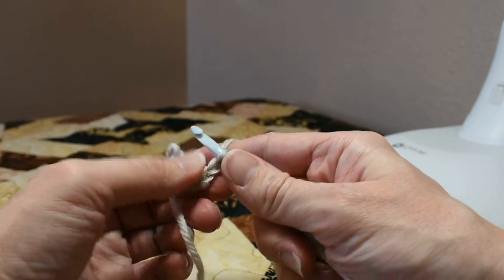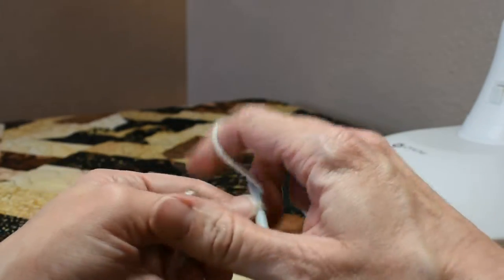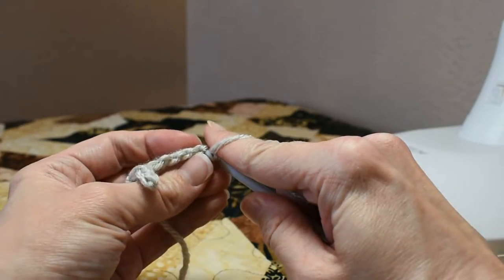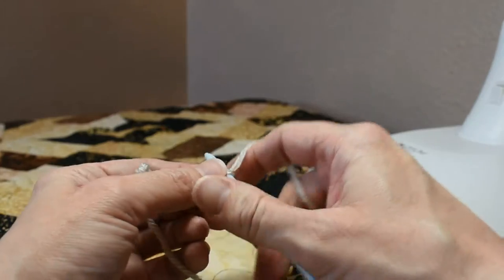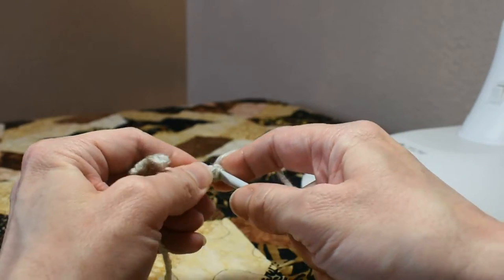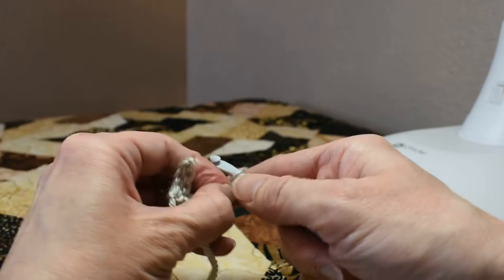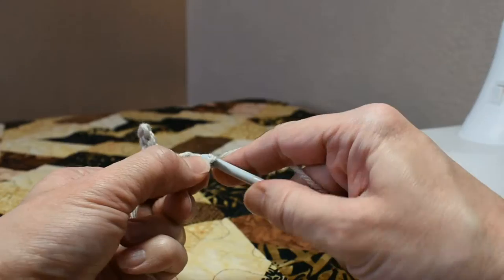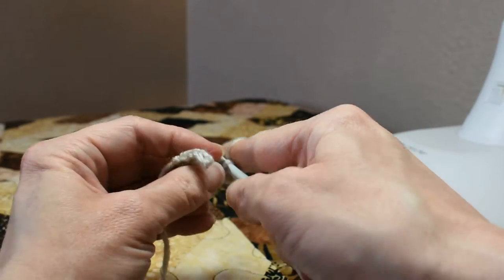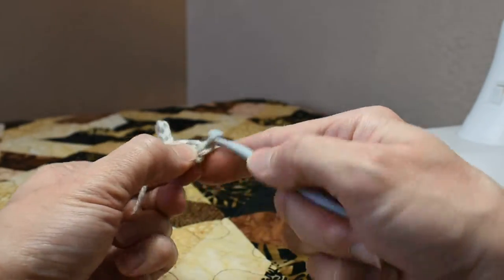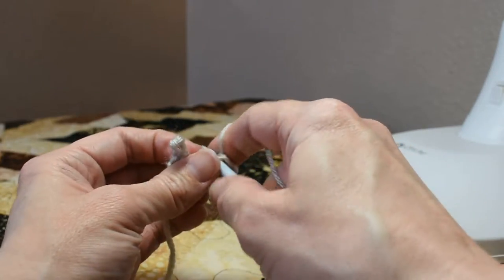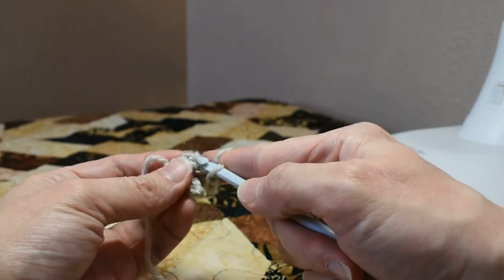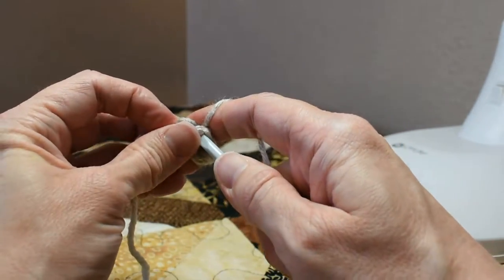Now chain four. Again working only in the back bumps we're going to slip stitch down the chain that we just made. And single crochet in the last single crochet that you made.